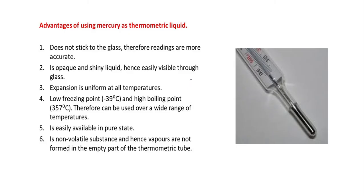The advantages of using mercury as a thermometric liquid: Mercury will not stick to the glass, which enables us to read the temperature more accurately. It is opaque — light will not pass through it — so it is shiny and the reading is easily visible. Its expansion is uniform, meaning it expands by an equal amount for every degree rise in temperature at all temperatures, unlike other liquids. It has a very low freezing point of minus 39 degrees Celsius.